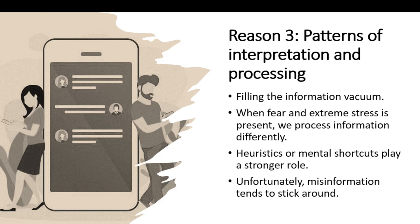The third thing worth talking about is the emergency context. When we're interpreting information in an emergency, there's often not a lot of preexisting vetted and clearly accurate information available — it's not a situation where there's a fact sheet you can just pull. So we fill that information vacuum with new information we find and see value in sharing. When we're processing in a situation where there's fear or stress, we process a little less thoughtfully and carefully in terms of whether or not information came from an expert source. This leads to faster sharing of less vetted information.